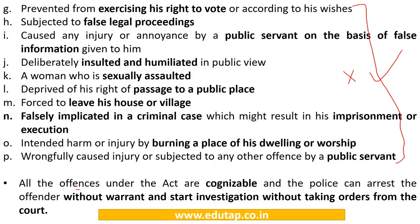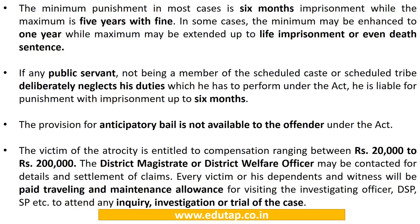An important point to remember: all the offences under the Act are cognizable, and police can arrest the offender without warrant and start investigation without taking orders from the court. All offences under the Scheduled Caste and Scheduled Tribes Act are cognizable, with the quantum of punishment varying from 6 months imprisonment to 5 years with fine, and even more in some cases. Even a public servant is liable for imprisonment of 6 months if he deliberately neglects his duties under the Act.